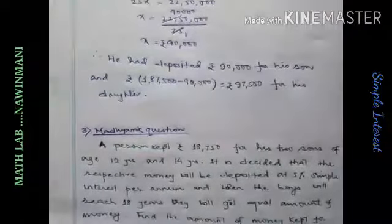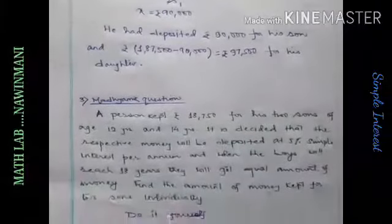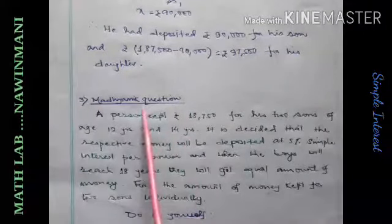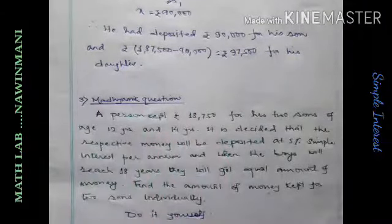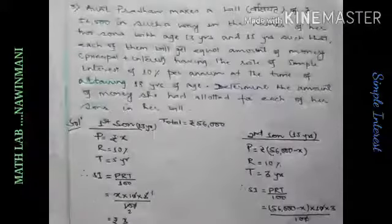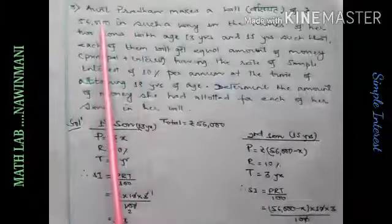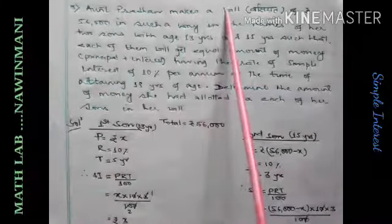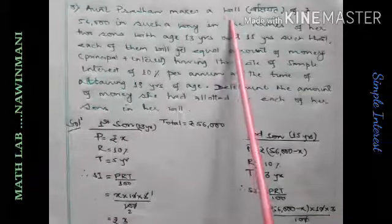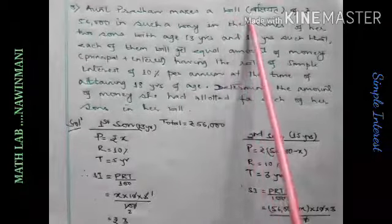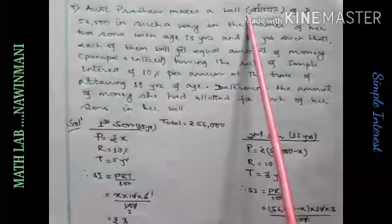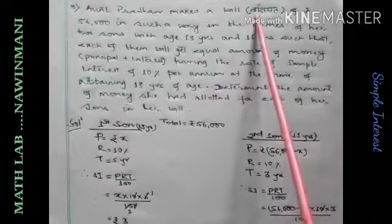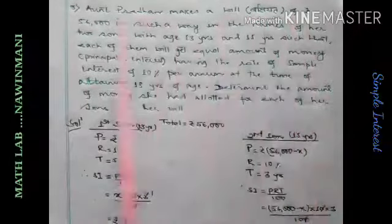So, similar question we have here. This is very similar. You just study it and then do it. This one comes in madhyamik also. See, this is a very similar problem. A person makes a will. Will means testament that a person makes before dying. He is writing that to my son give this, to daughter give that. He makes a will of rupees 56,000.